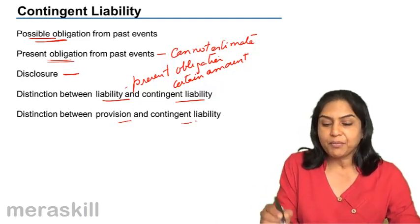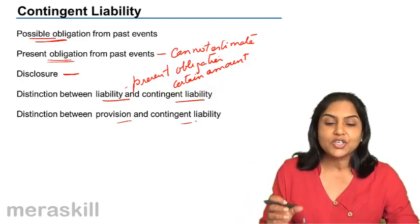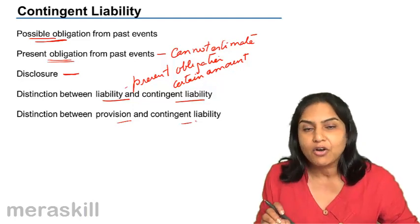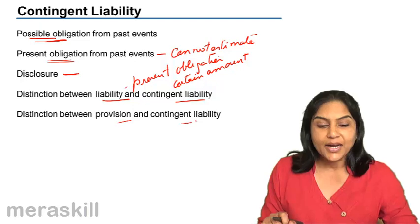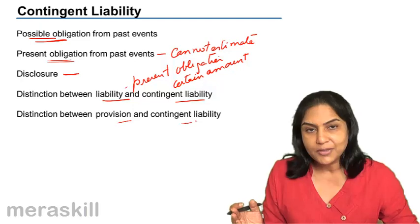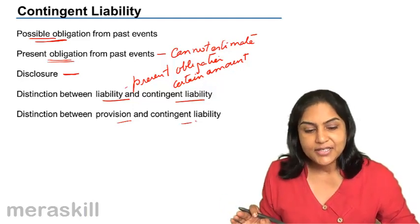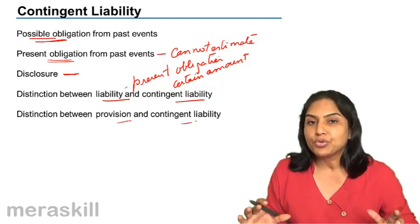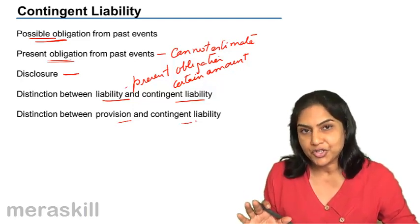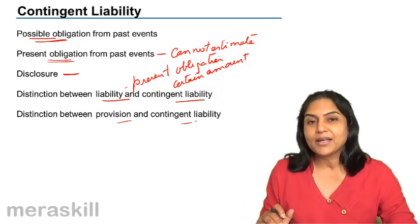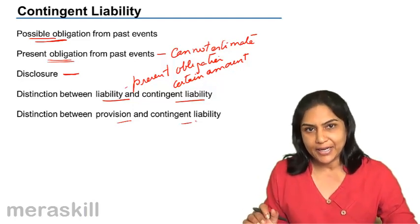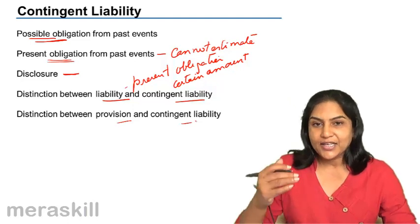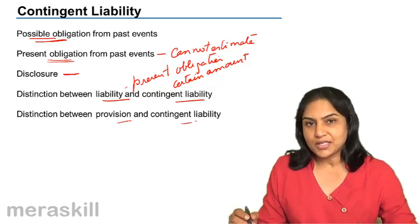What would be the distinction between a provision and a contingent liability? When there is a present obligation due to past events and we can estimate the amount with some degree of reasonableness, it is called a provision. A contingent liability, on the other hand, is only a possible obligation — it may or may not arise. Sometimes it is also a present obligation, but it is called a contingent liability because we cannot estimate the amount with any degree of reasonableness, or we do not expect any outflow of funds to meet this liability. So we have a contingent liability, a provision, and a liability — let us understand the difference between these three with a few examples.